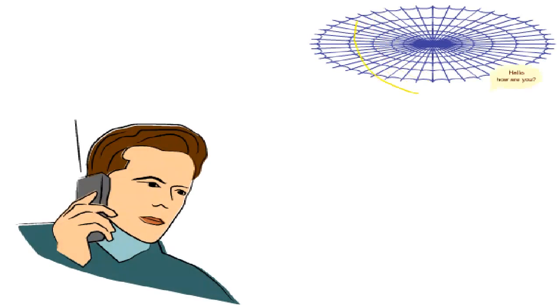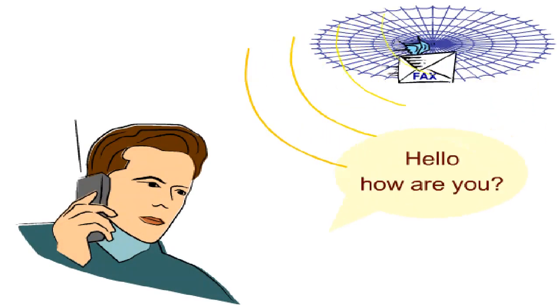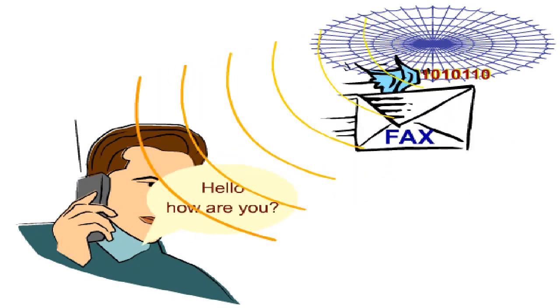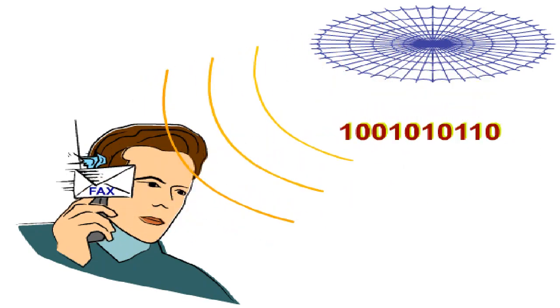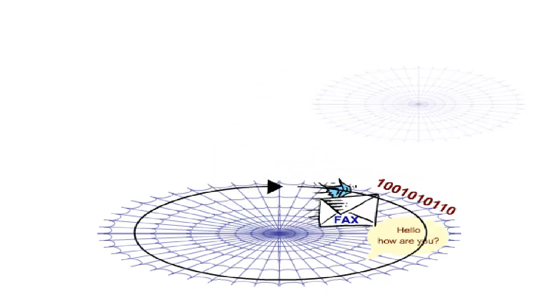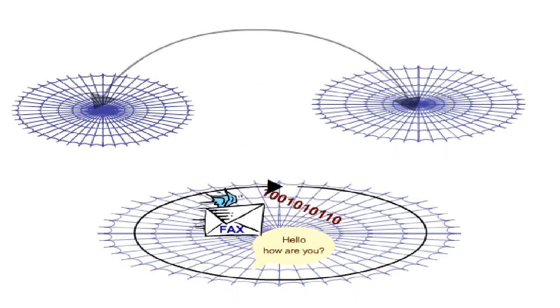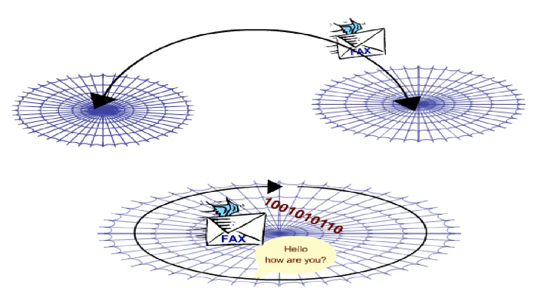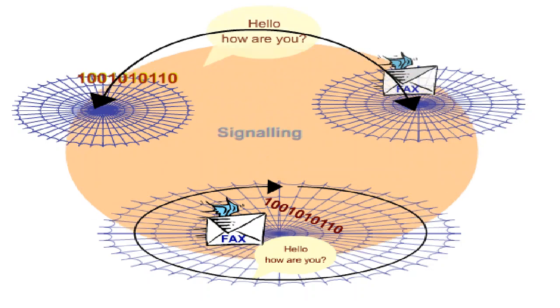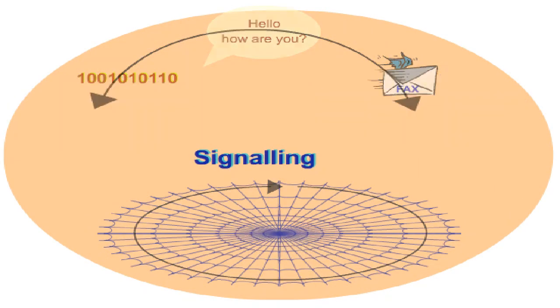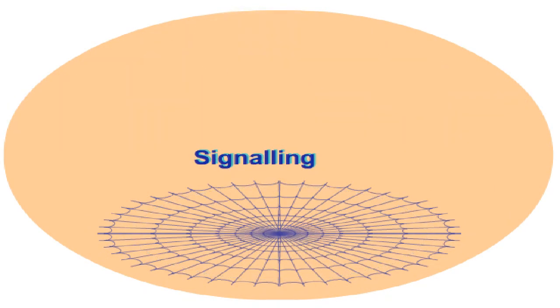To enable GSM customers to use speech, fax and data services wherever they are within the network, information and data must be exchanged within, as well as between, different networks. This process is called signalling.